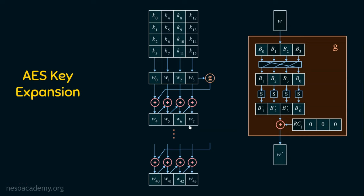To generate W8 through W11 for round 2, we repeat the same step. W7 is given to the G function, and the output is XORed with W4. So W8 = W4 XOR G(W7). This process continues to generate all the round keys required for AES, whether it is 128, 192, or 256 bits, generating all the words up to W40–W43 for the last round.